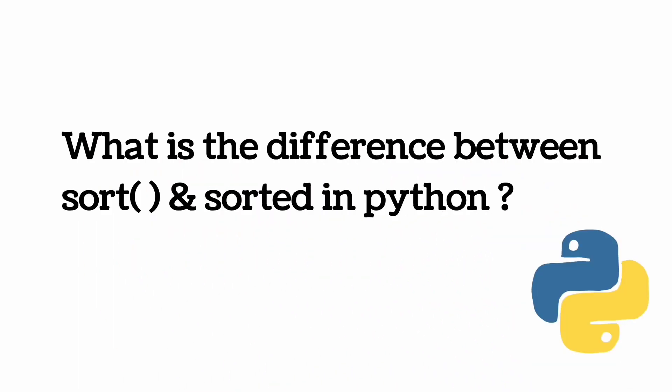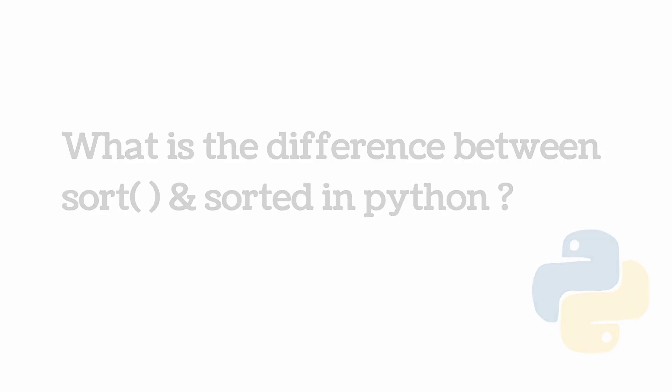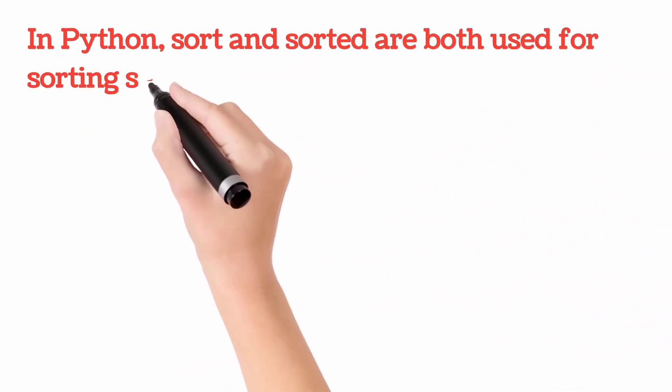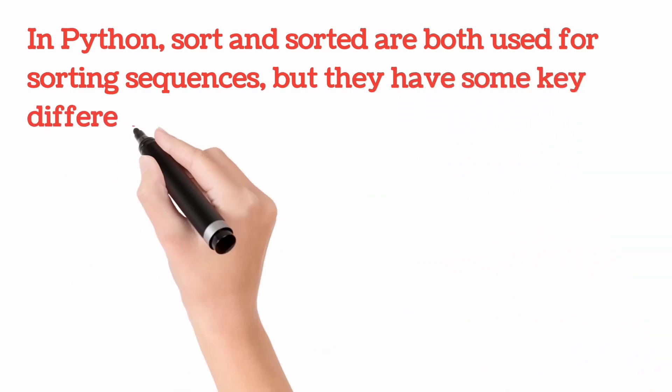What is the difference between sort and sorted in Python? In Python, sort and sorted are both used for sorting sequences, but they have some key differences.